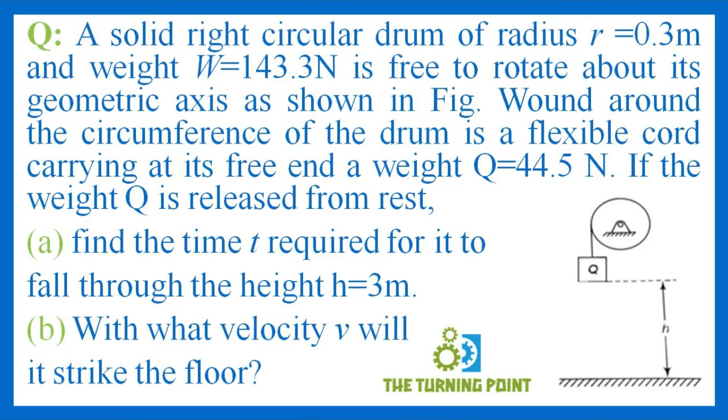A solid right circular drum of radius r=0.3 meters and weight W=143.3 newtons is free to rotate about its geometric axis as shown in figure. Wound around the circumference of the drum is a flexible cord carrying at its free end a weight Q=44.5 newtons. If the weight Q is released from rest, find the time t required for it to fall through the height h=3 meters, and with what velocity v will it strike the floor.